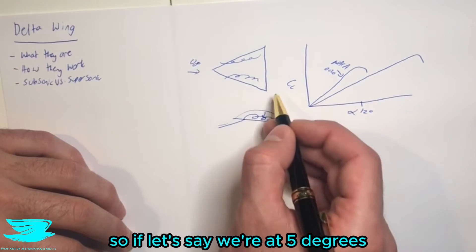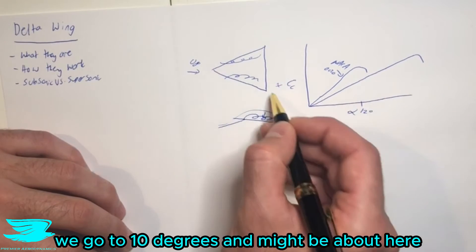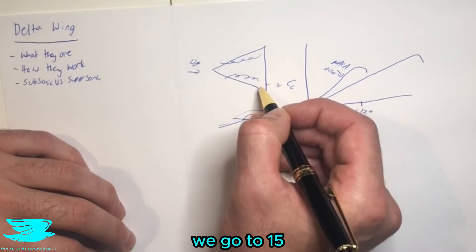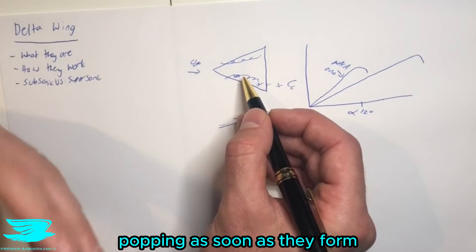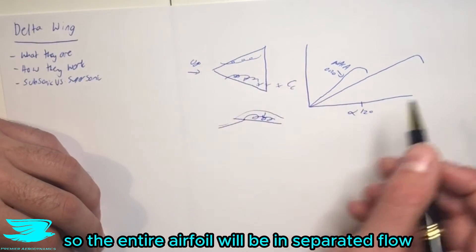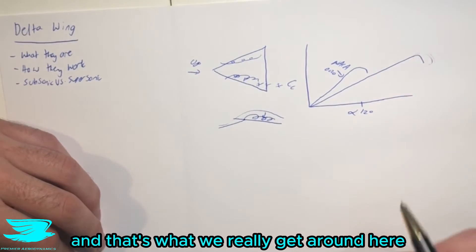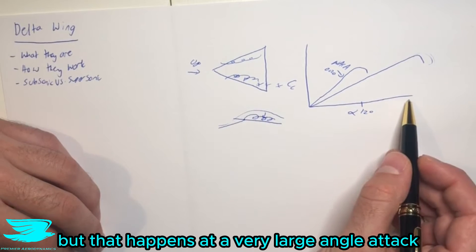So if let's say we're at five degrees, they might start to pop around here. We go to 10 degrees, it might be about here. We go to 15, they start creeping up further and further before they really start just popping as soon as they form. So the entire airfoil will be in separated flow. And that's what we really get around here. But that happens at a very large angle of attack.